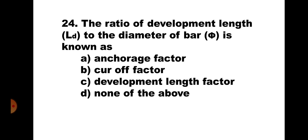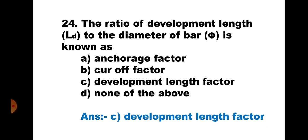Question 24. The ratio of development length LD to the diameter of bar phi is known as: A. Anchorage factor, B. Cutoff factor, C. Development length factor, and D. None of the above. The formula for LD is 0.87Fy×φ / (4×Tau BD). Dividing by phi, LD/φ is a constant factor known as the development length factor. Hence, the correct answer is C. Development length factor.